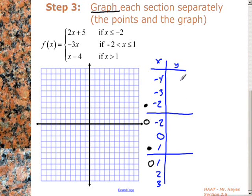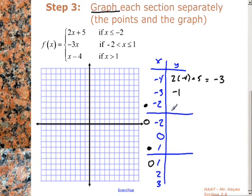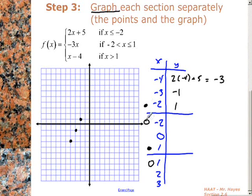Now we've got to find the values. For the first function, plugging in negative 4: 2 times negative 4 plus 5 gives negative 3. Plugging in negative 3: negative 6 plus 5 gives negative 1. Plugging in negative 2 gives positive 1. So those are our three points. We go ahead and plot them: negative 4, negative 3; then negative 3, negative 1; and then at negative 2, positive 1 — that's a filled-in dot. This covers anything less than negative 2, so we draw a ray from there downward.